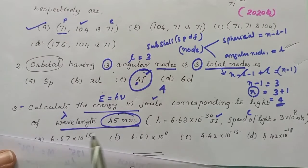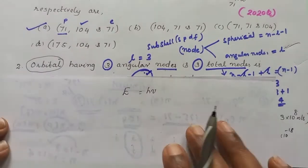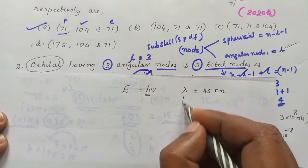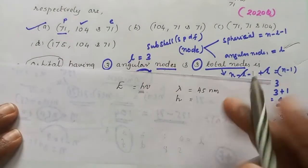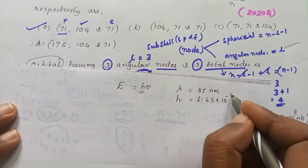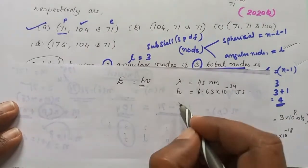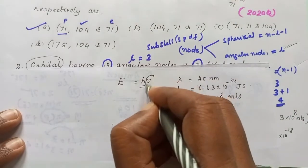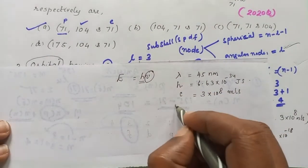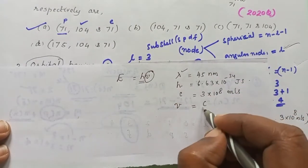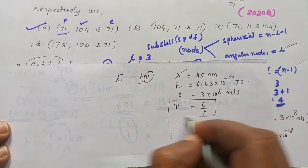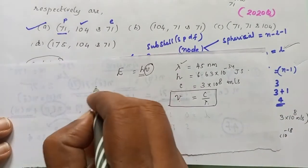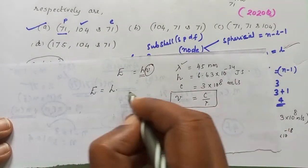In this question wavelength is given as lambda equal to 45 nanometers. Since nu has a relation with lambda — nu equals C divided by lambda — the equation becomes E equals h times C divided by lambda. We substitute the given values into this equation.